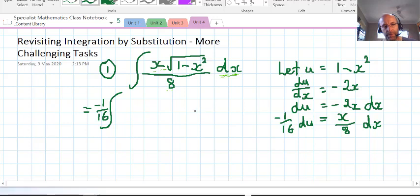So we can write in the negative 1/16 out here, we can write the du over here, and then we've got the substitution involving u. It's got a square root over it, so it's u to the 1/2 if you want to write it in index form.